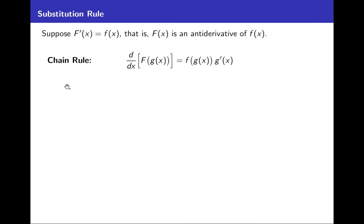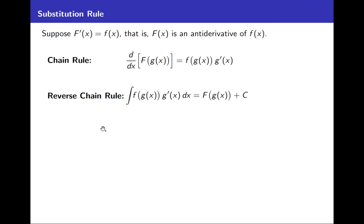Whenever we have a derivative formula like this one — the chain rule — we can run it in reverse and get an integration rule. Running this in reverse says that F(g(x)), since its derivative was f(g(x))·g′(x), is an anti-derivative of f(g(x))·g′(x). So the formula reads: the integral of f(g(x))·g′(x) dx = F(g(x)) + C. You might call this formula the reverse chain rule.